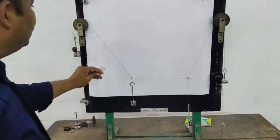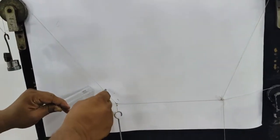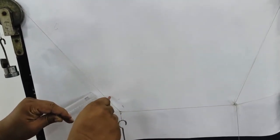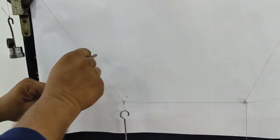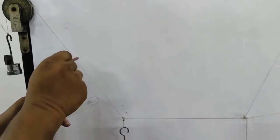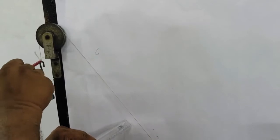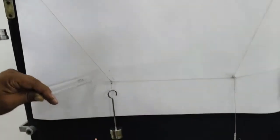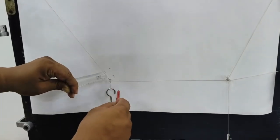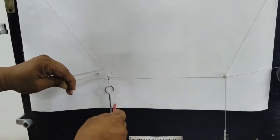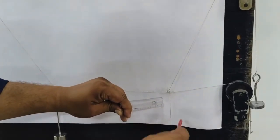We are taking the directions, pointing them out. The magnitude will be the load of this. Here it is vertically downwards acting. F3 is also acting downwards.